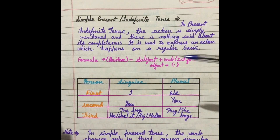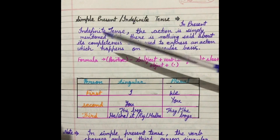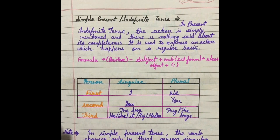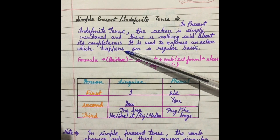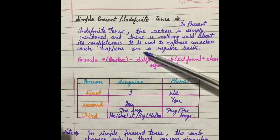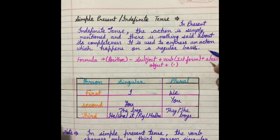In this video, we will discuss about simple present or present indefinite tense. In present indefinite tense, the action is simply mentioned and there is nothing said about its completeness. जो action है, वो simply बताया जाता है, but कहीं पर भी ये mention नहीं किया जाता कि action पूरा हो चुका है. It is used to express an action which happens on a regular basis — रोजाना जो होता है, daily routine में, that is told in the simple present indefinite tense.